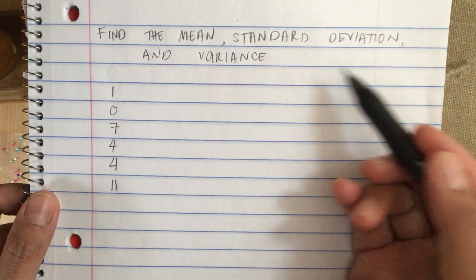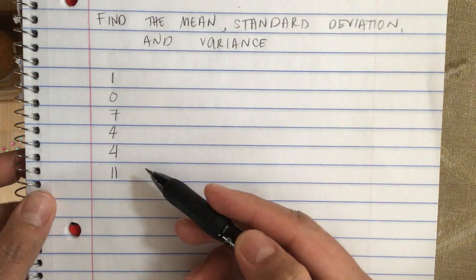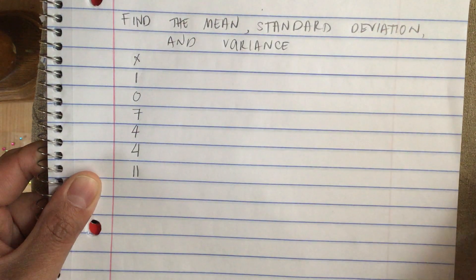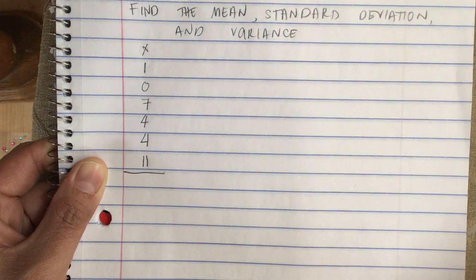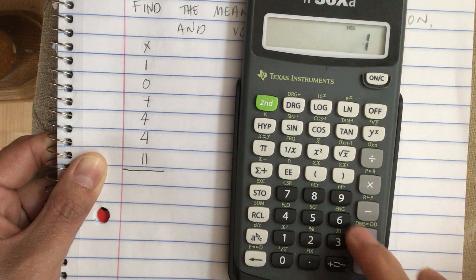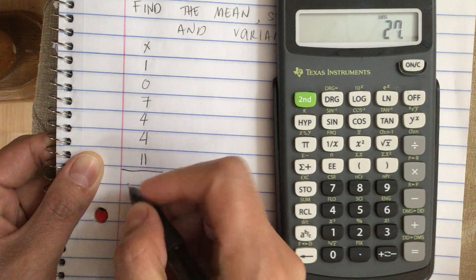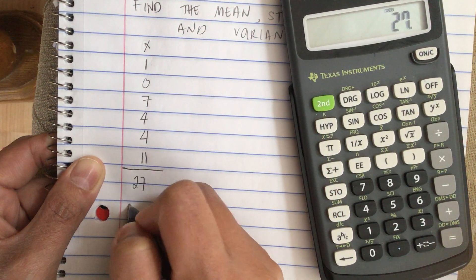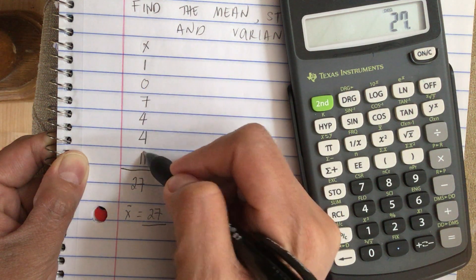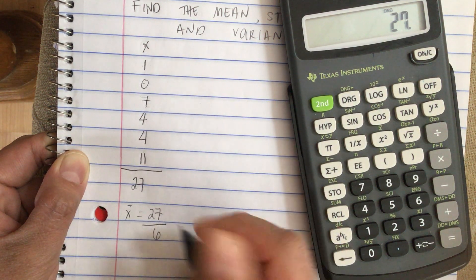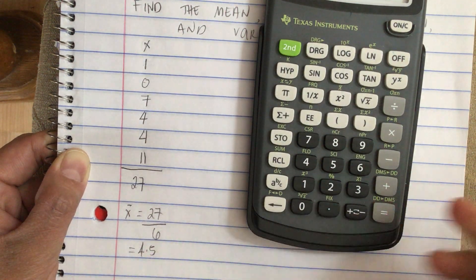Find the mean, standard deviation, and variance. We're given the data set: 1, 0, 7, 4, 4, and 11. Let's call this data set X. To find the mean, we sum all the data: 1 + 0 + 7 + 4 + 4 + 11 = 27. The mean X-bar equals 27 over n. There are 6 data points, so the mean is 27 over 6, which equals 4.5.